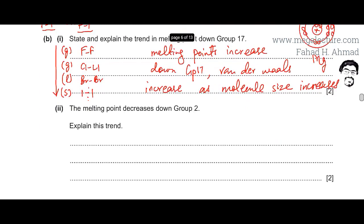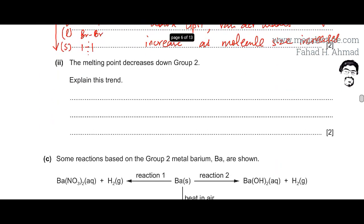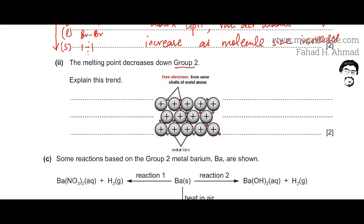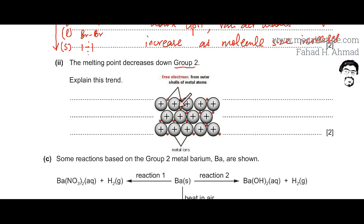Moving to the next part: the melting point decreases down group 2, and we need to explain this trend. Group 2 elements are all metals, so we're talking about metallic bonding. In metallic bonding, there is a giant metallic lattice with many positive metal ions. Metals lose electrons to form positive ions surrounded by delocalized electrons, and there is attraction between the delocalized electrons and the positive metal ions.